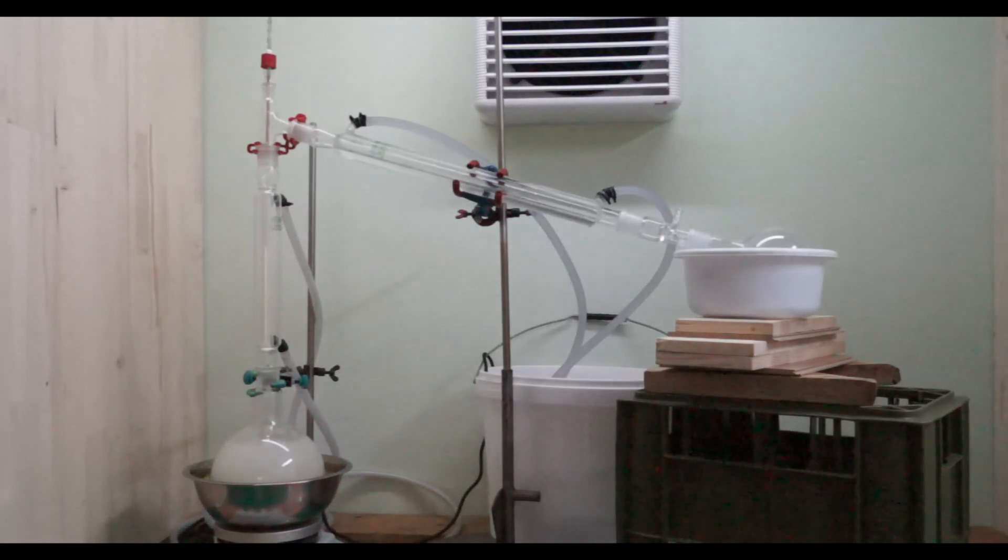When all the reagents are added I assemble the distillation apparatus that I will be using for this reaction. The 2 liter reaction flask is put in an oil bath on top of a magnetic stirrer and heater. I use a non-connected 25 cm Liebig condenser for a distillation column.